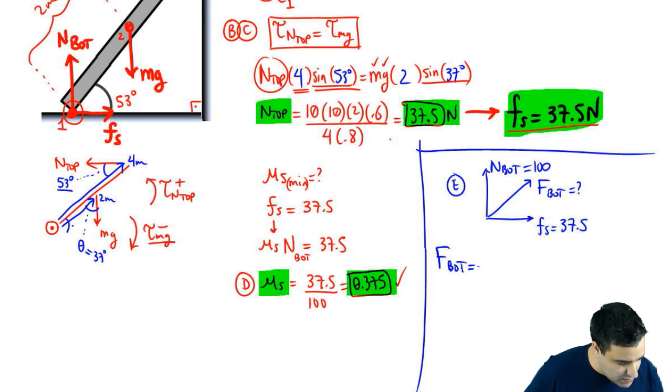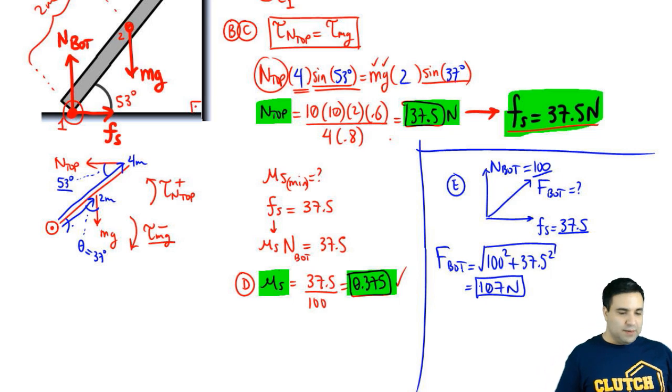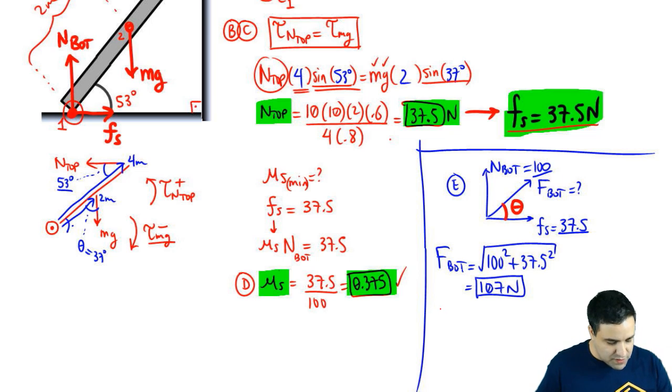So F bottom is just the square root of 100 squared, because of this number, plus this square, 37.5 squared. And if you do this, you get 107 newtons, which is the magnitude of this force. I'm going to just solve for one more thing. It wasn't asked here, but I could have asked also, what is the direction of the bottom force, of the total force at the bottom? So theta bottom.